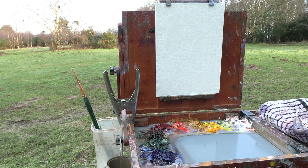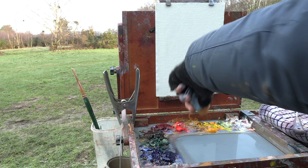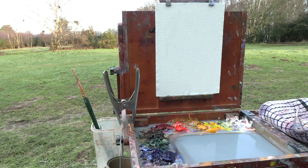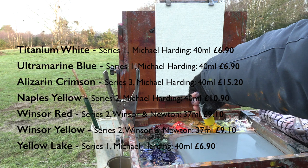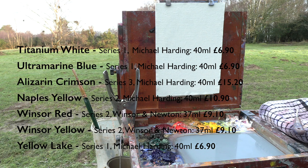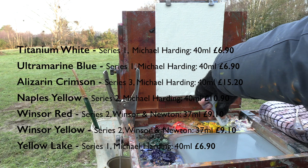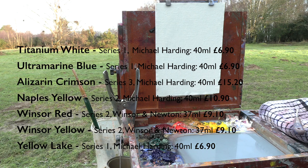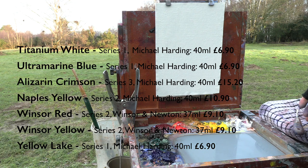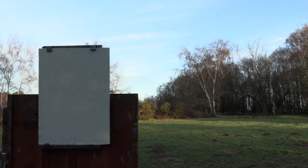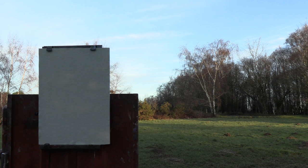To test this theory, I'm going to be painting a landscape using a limited palette of lower Series colours, and I'm going to substitute some of the more expensive colours I normally use for cheaper alternatives. The palette I'm using is essentially made of different versions of the three primaries and Titanium White — Ultramarine Blue, Alizarin Crimson and Naples Yellow. Instead of Cadmium Red, I'm going to be using Winsor Red by Winsor & Newton, which is a Series 2 colour and costs £9.10 for a 37ml tube. And instead of Cadmium Yellow, I'm going to be trying two different yellows: Winsor Yellow by Winsor & Newton and Yellow Lake by Michael Harding, which is a Series 1 colour and costs £6.90 for a 40ml tube. The scene I'm going to be painting is a fairly simple composition of some silver birch trees on a winter morning.